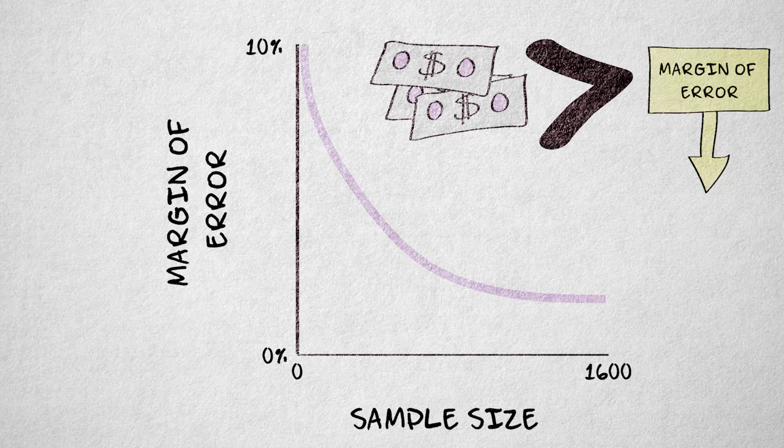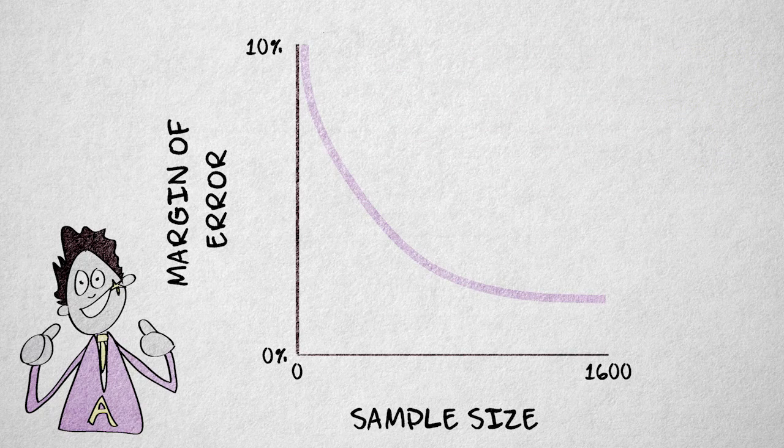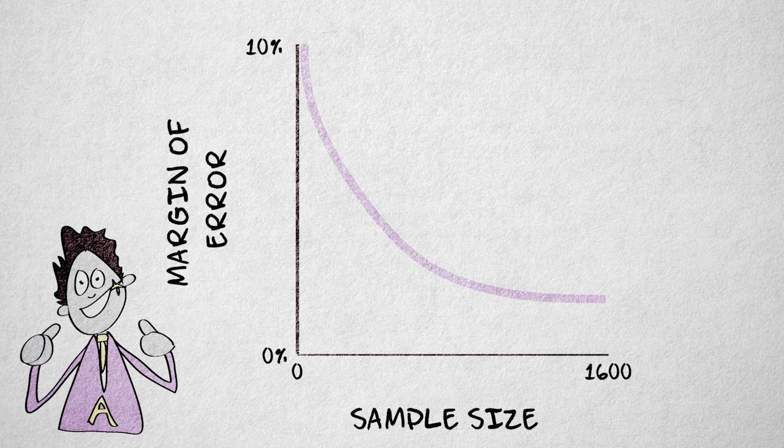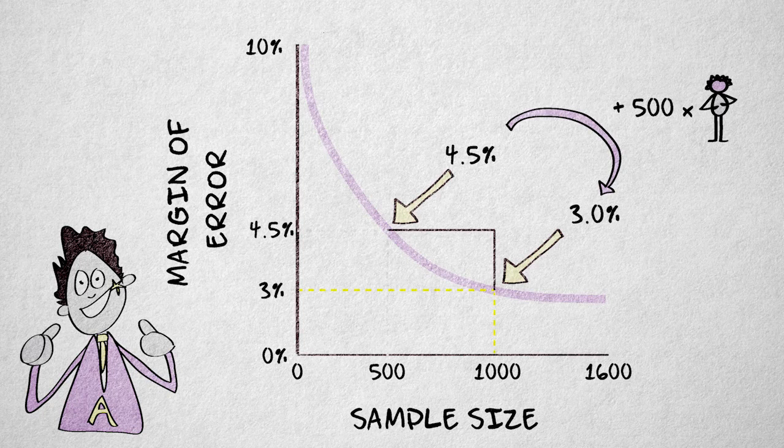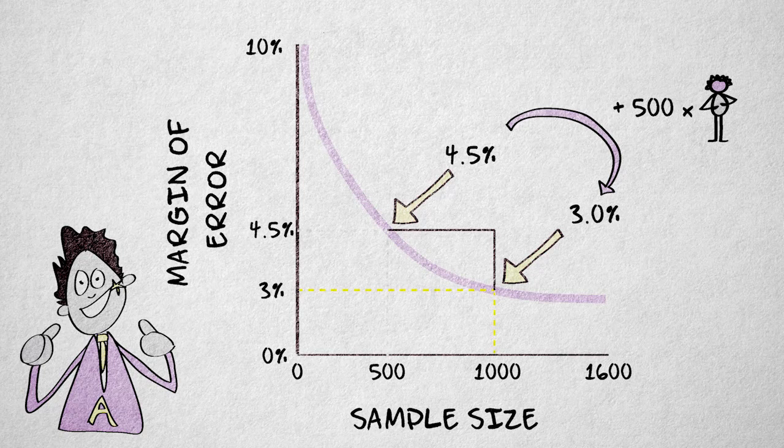Say we want to estimate the proportion of votes for candidate A in an upcoming election. Suppose we have a sample of 500 eligible voters. Then the error won't be cut in half if we double the sample to a thousand elements. The decrease in error will be much, much smaller.